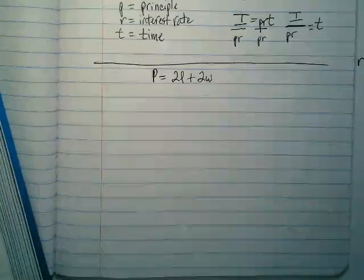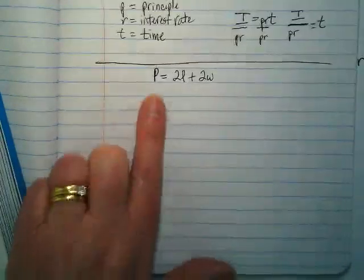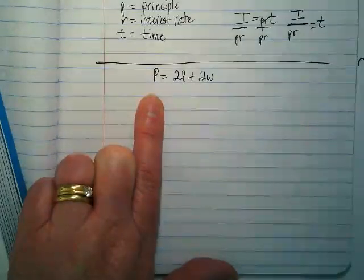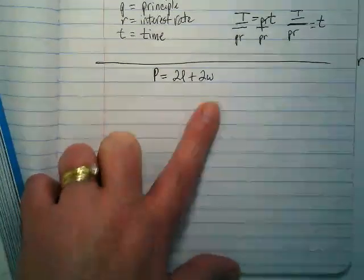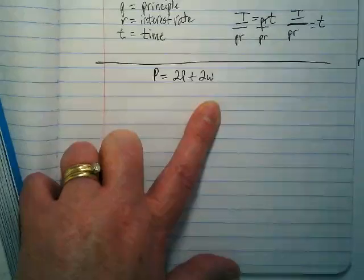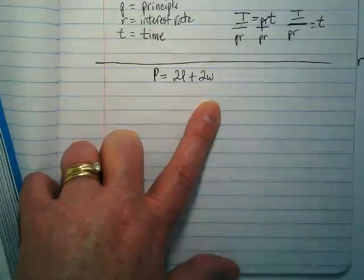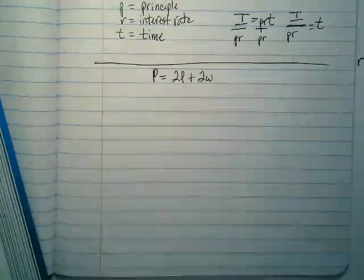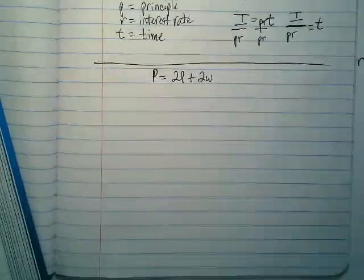In other words, if you were given some numbers, like if they gave you the perimeter and they gave you the length, but they didn't give you the width, you could redo this to find the width by doing what we're doing. We're just going to play with it without knowing what those numbers are.